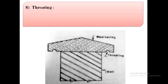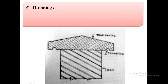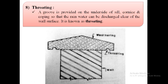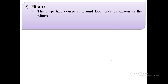The next term is throating. As shown in the image, throating is a groove provided on the underside of sill, cornice, and coping so that rainwater can be discharged clear of the wall surface. It is known as throating.